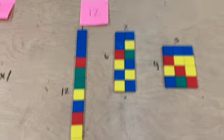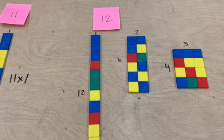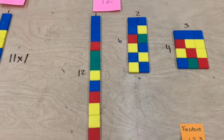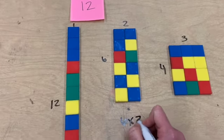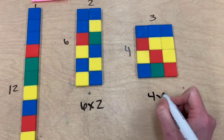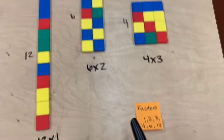Then for number 12, we were able to come up with 3 different combinations of factors. We've got 12 times 1, we've got 6 times 2, and 4 times 3.